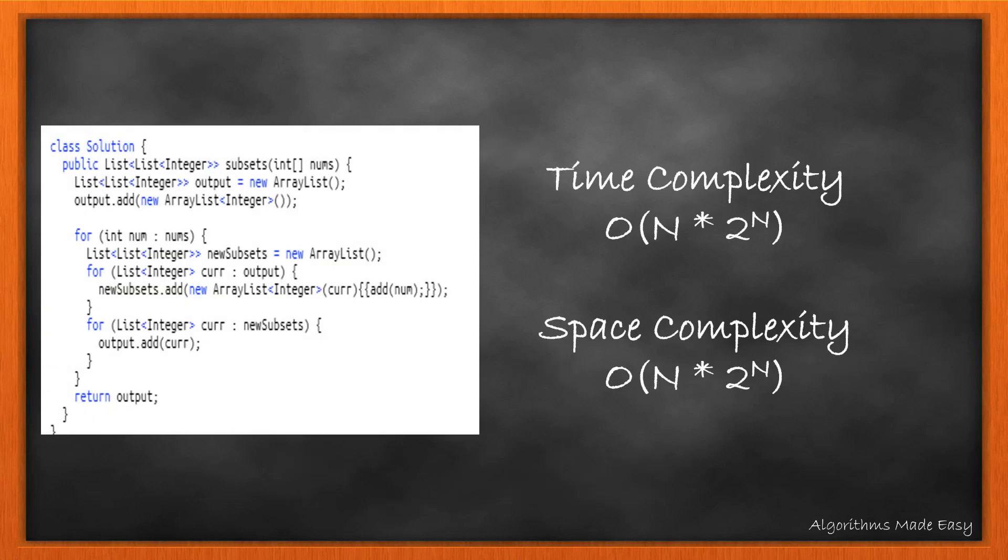The time and space complexity for this method is O(n * 2^n). It is because we generate all the subsets for length 0 to n and then copy them into the output list. That will be of size 2 raised to n.